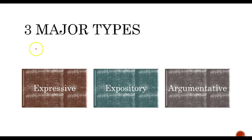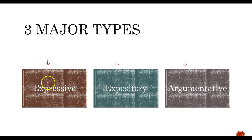The three types are: expressive — writing that expresses feeling or sentiment; expository — writing that explains something or explains how to do something; and argumentative — writing that's meant to convince people of something. Each of those different kinds of writing we just saw falls into one or more of these categories.